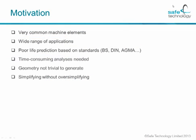So why did we go ahead and decide to develop fast gear fatigue analysis? For one, gears and gear wheels are very common machine elements that figure in a multitude and a huge range of applications. There is a big downside if you're trying to predict the life based on a standard, be this either British, German or American, and that is simply that the life prediction isn't really that good. If you then turn to numerical solutions and would like to look a little bit more in detail on what goes on, then effectively you are going to need a lot of time-consuming analyses.